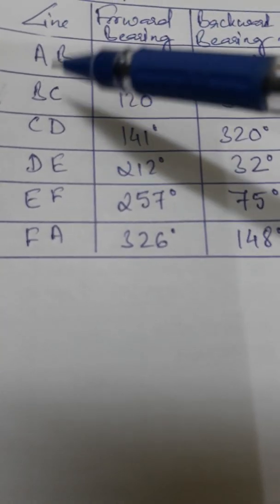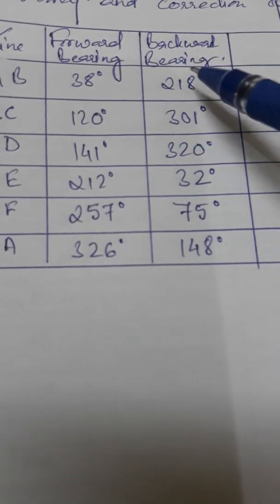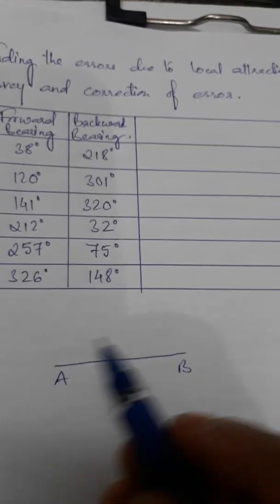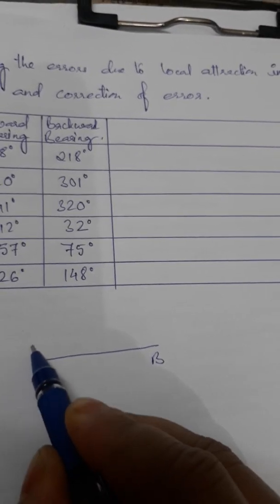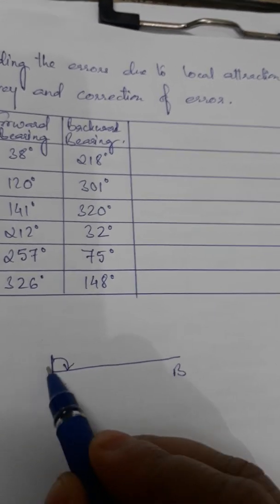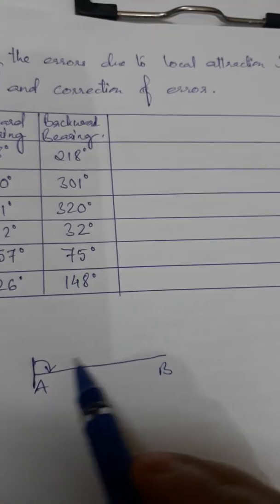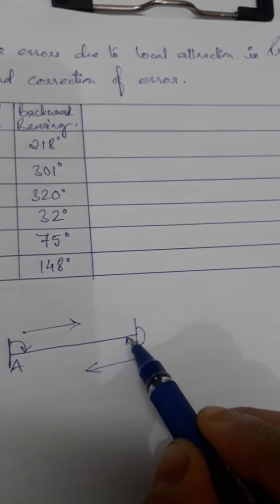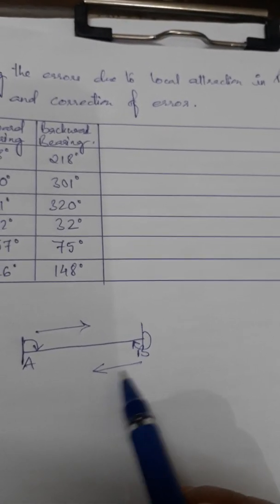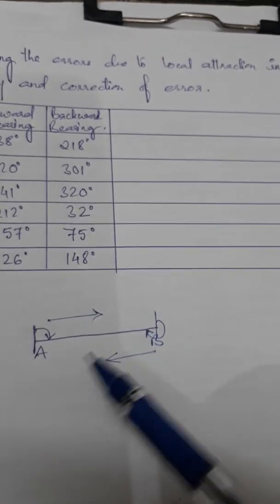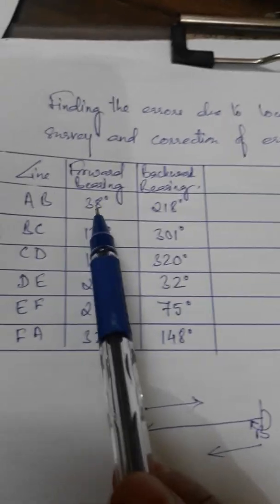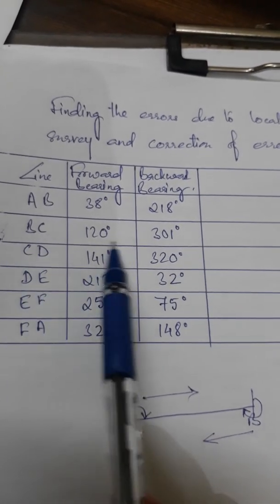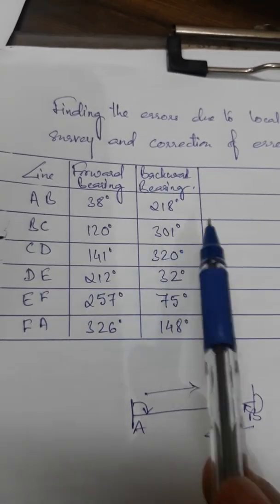To understand forward and backward bearing: for a given line AB, when we take the alignment with the prismatic compass from point A and find this angle, that is called the forward bearing — because we are sighting from A to B. On the other hand, when we are sighting from B to A, that reading is called the backward bearing. So there are two values for each line.